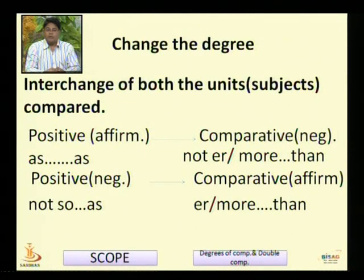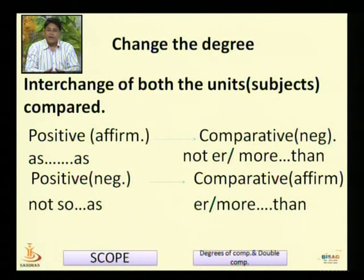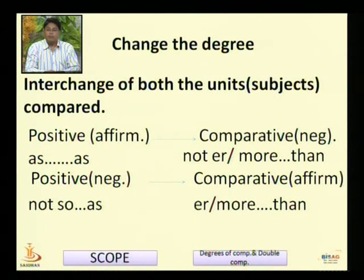The syntactic pattern we have to follow is comparative negative. In this pattern, 'not' is used immediately after the verb, then the comparative form. When a positive affirmative degree is changed into comparative negative degree and vice versa, affirmative becomes negative and negative becomes affirmative, and positive is changed into comparative and comparative is changed into positive.